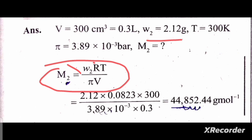R is the universal gas constant, 0.0823 L bar mol⁻¹ K⁻¹. T is the temperature, 300 Kelvin. π is the osmotic pressure, 3.89 × 10⁻³ bar. V is the volume, 0.3 liters.